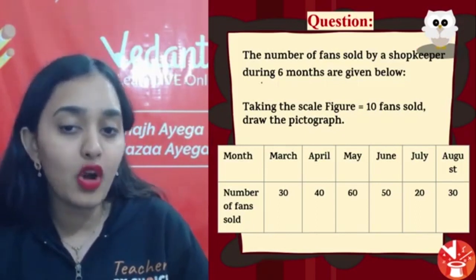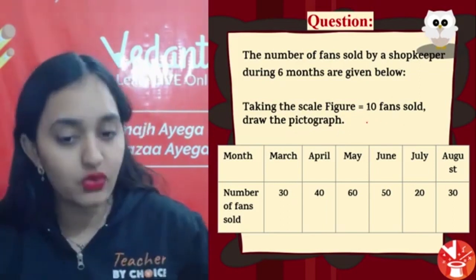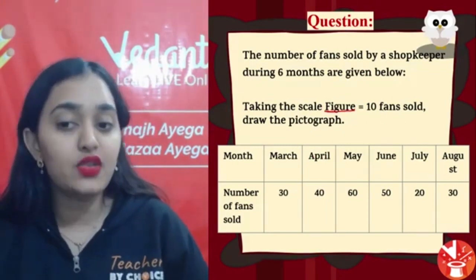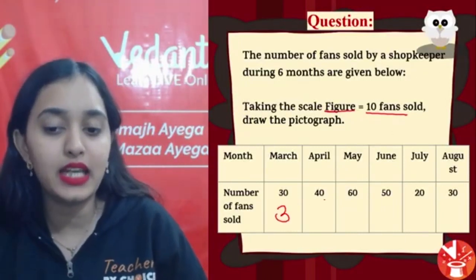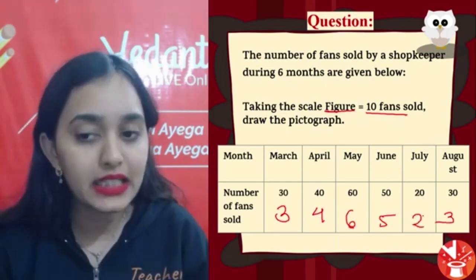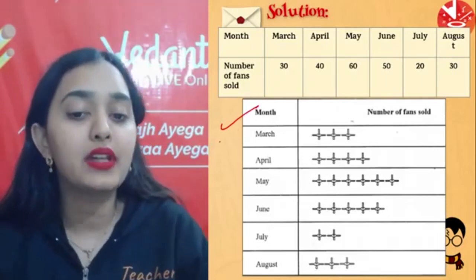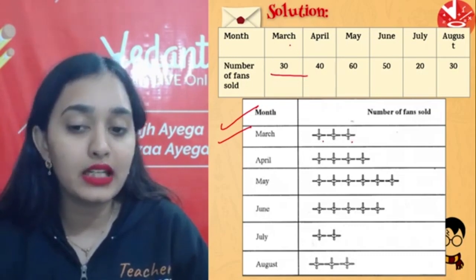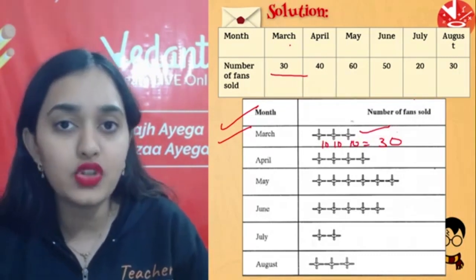Next pictograph: Number of fans sold by a shopkeeper during 6 months — scale figure is 10 fans per image. March has 30 fans, so 3 images; 40 gets 4 images; 60 gets 6; 50 gets 5; 20 gets 2; and 30 gets 3. If you have any confusion in drawing a pictograph, comment and ask.